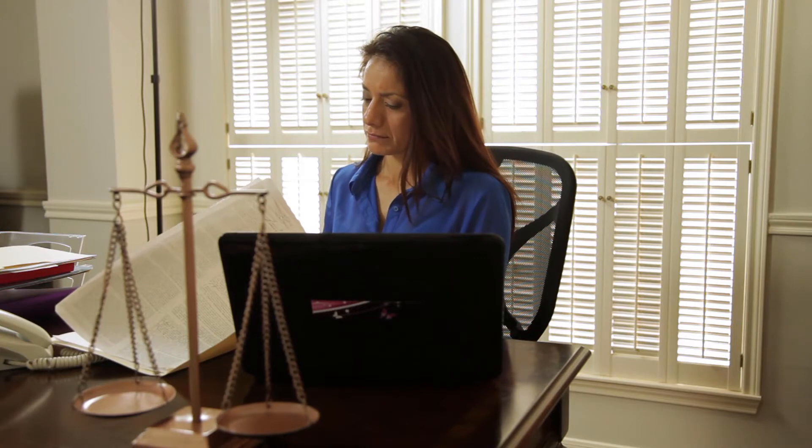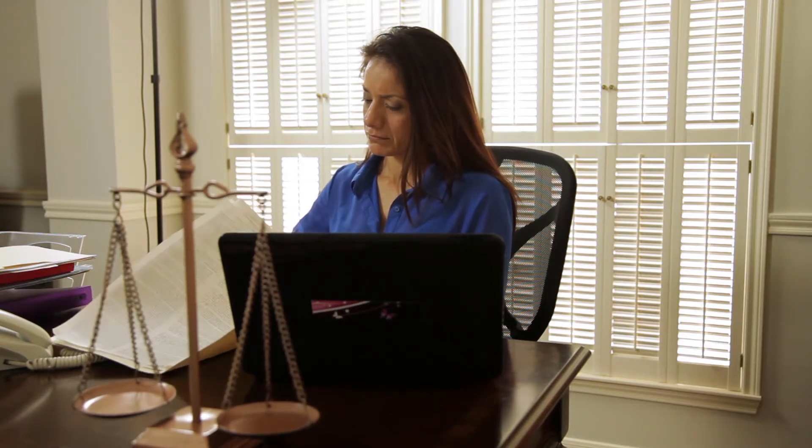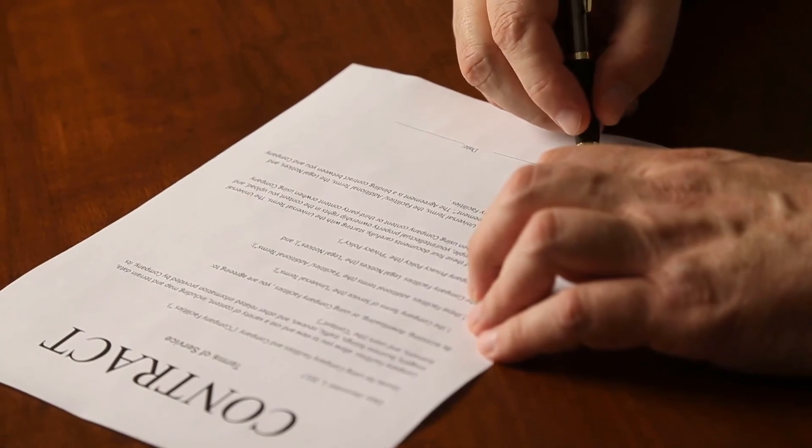When disability harassment occurs, it is important to first follow any rules regarding the incident that relate to the place where it occurred. For instance, if the incident occurs at work or school, then taking the appropriate steps within the company or institution is typically advisable. If that is not an option, seeking the help of a lawyer is likely the best way to get justice after suffering harassment.